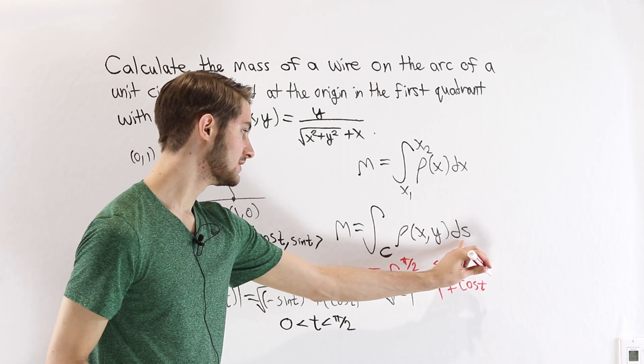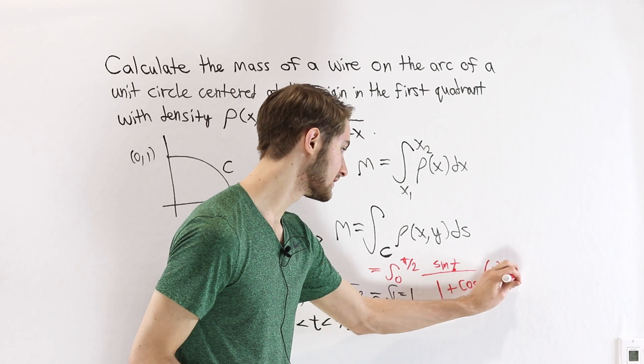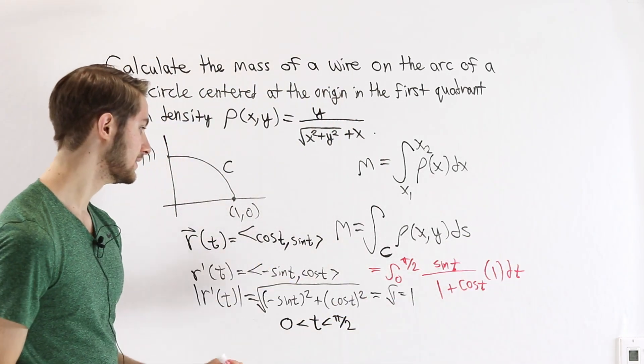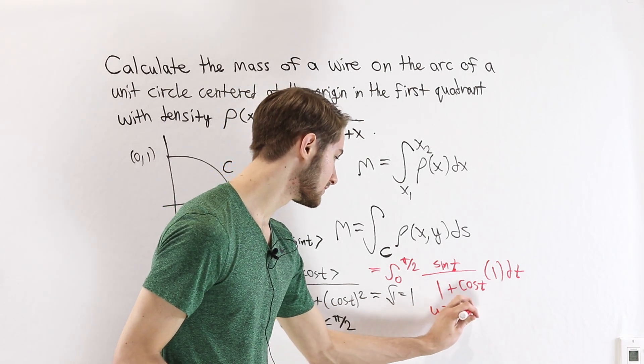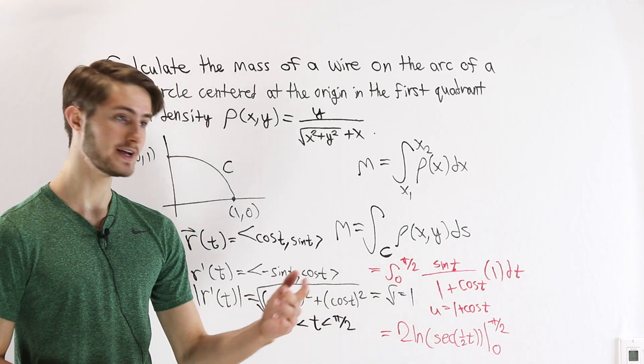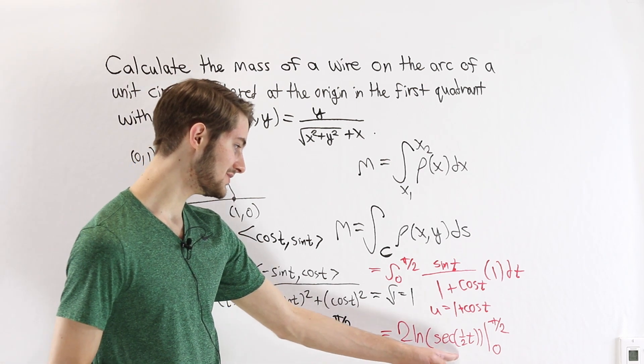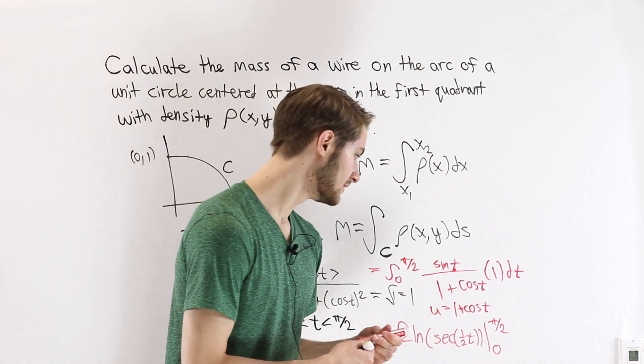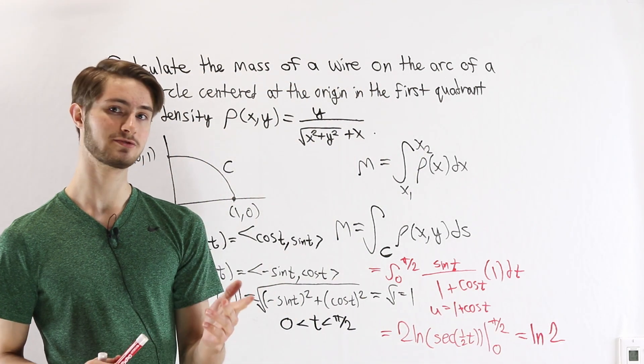And then ds is the magnitude of r'(t), which is just 1 times dt. And this is the integral that we need to evaluate. Again, if we needed to do this, we could substitute u equals 1 plus cosine of t. And if we go through all the steps of this u substitution and do that integral out, the result that we get is 2 times the natural log of the secant of 1/2 t evaluated at π/2 and 0, which gives us our final result of the natural log of 2 just like before.